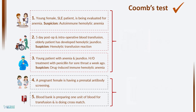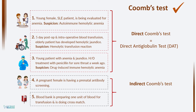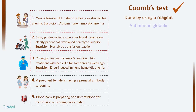We will now move on to the topic details. Direct Coombs test is also called direct antiglobulin test. Similarly, indirect Coombs test is also called indirect antiglobulin test. Anti-human globulin, or simply antiglobulin, is used in this test, and that's why the test name bears the word antiglobulin in it. Antiglobulin is also known as Coombs reagent. This antiglobulin is basically derived from non-human sources. If immunoglobulins or complement are present on RBCs, after adding antiglobulin, it binds to human immunoglobulin or complement and leads to agglutination in the tube.